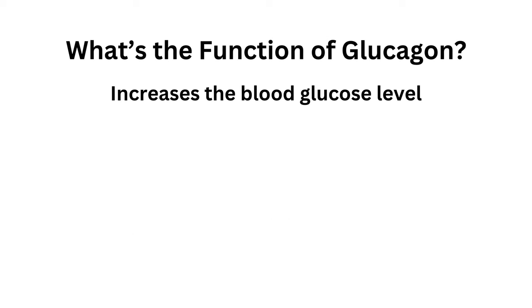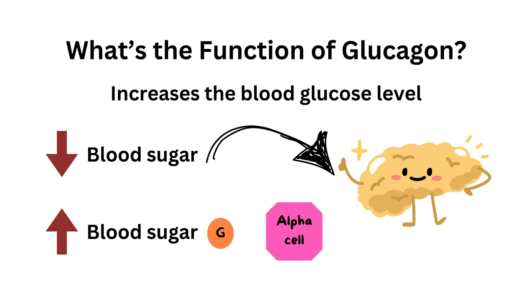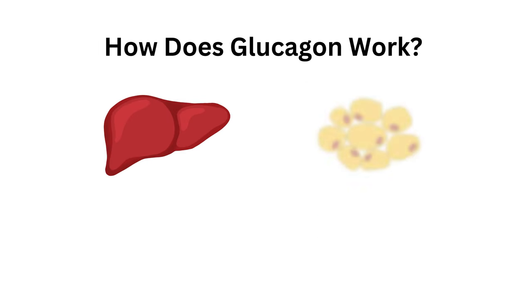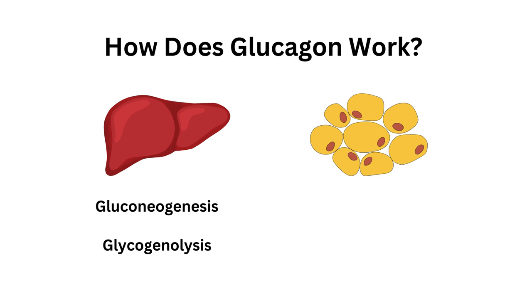Now let's move on to glucagon. When your blood glucose is low, it sends a message to the pancreas to ask the alpha cells to increase the blood sugar level and bring it back up to normal. Glucagon acts on your liver and adipose tissue. In the liver, it promotes gluconeogenesis — the production of new glucose — and glycogenolysis, which is the breakdown of glycogen into glucose, in order to increase the blood glucose level.